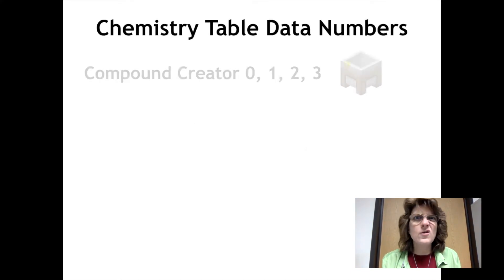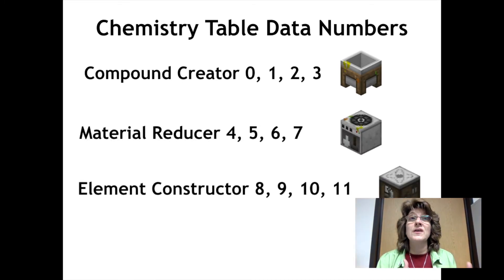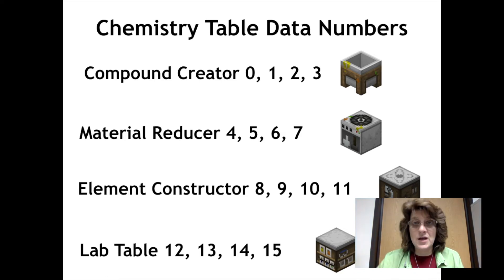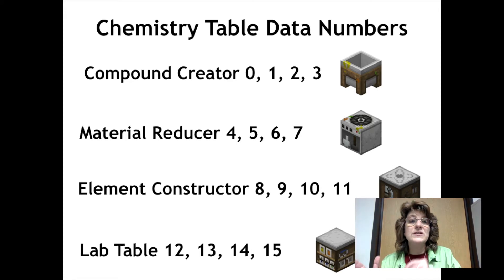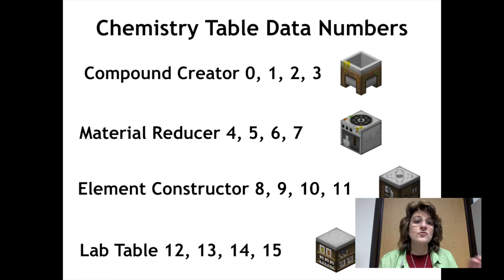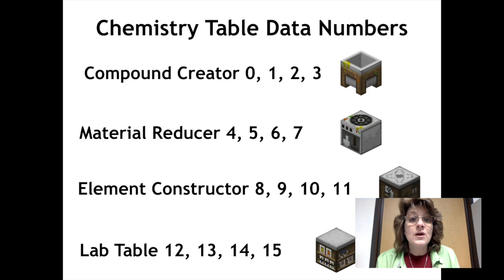Here's the list of all of the chemistry table data values. Zero through three are the data values for the compound creator. Four through seven are the data values for the material reducer. Eight through eleven are the data values for the element constructor. Twelve through fifteen are the data values for the lab table. You can use any one of those data value numbers for that particular table — I tested them all out and they all work.